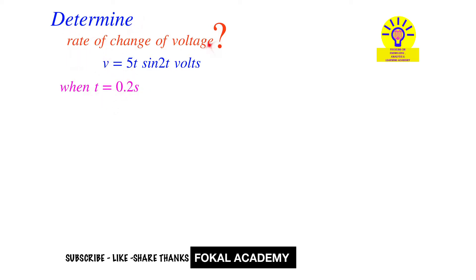First of all, find the rate of change of voltage. The rate of change of voltage is dv/dt. Derive the voltage function with respect to t, so that's equal to d/dt of 5t sin(2t).